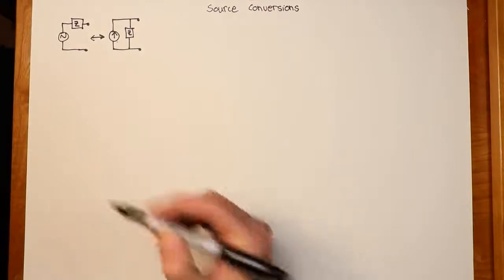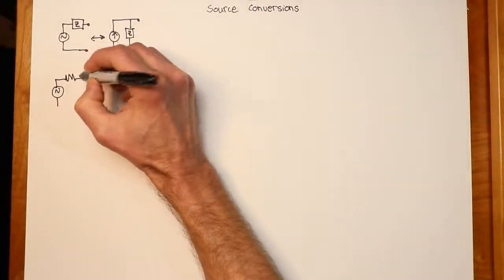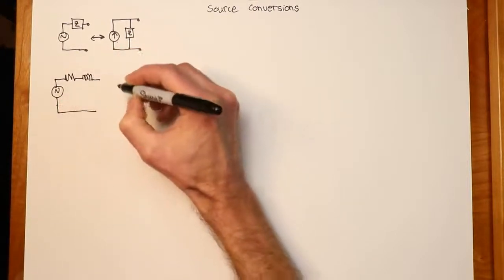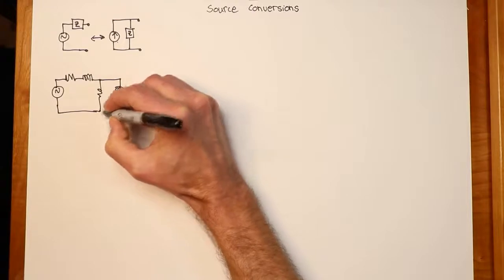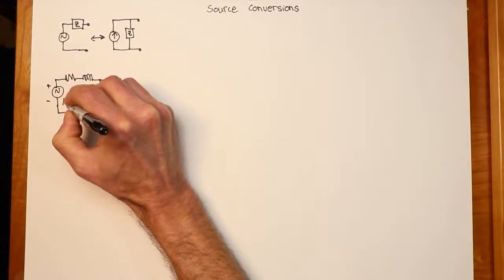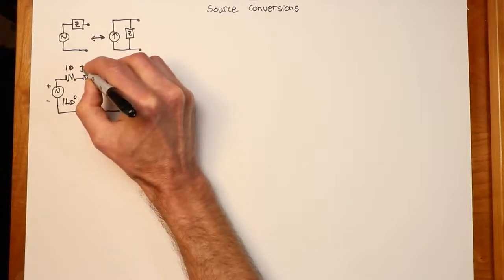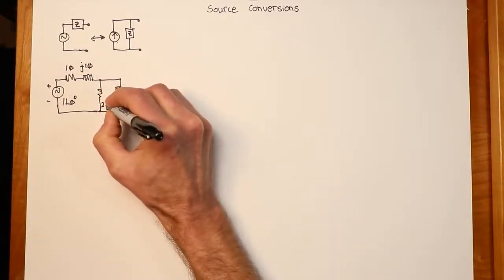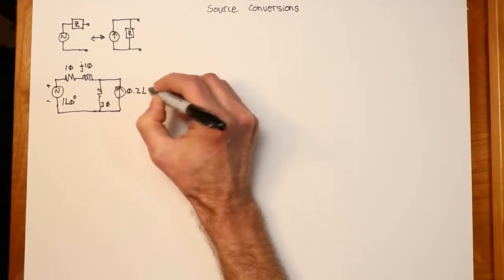Let's take an example. We'll take a circuit with two different sources. We'll start with a voltage source in series with a complex impedance, hooked into a current source. The voltage source is 1 at an angle of zero, the resistive value is 10 ohms, the inductive reactance is plus j10, 20 ohms on the other branch, and the current source will be 200 milliamps at an angle of 90 degrees.